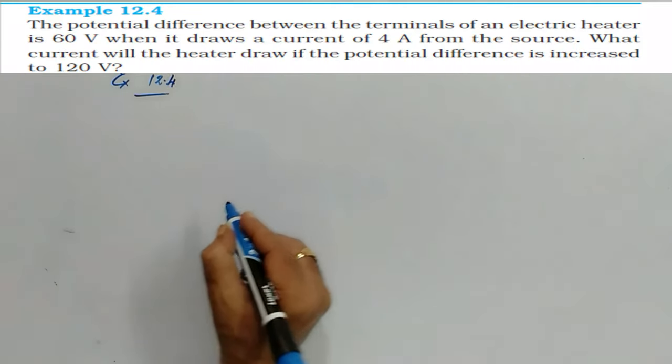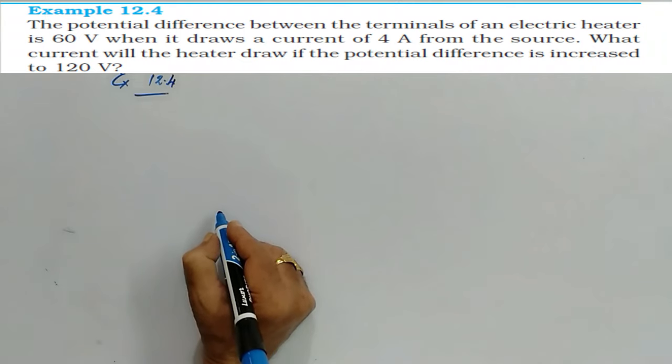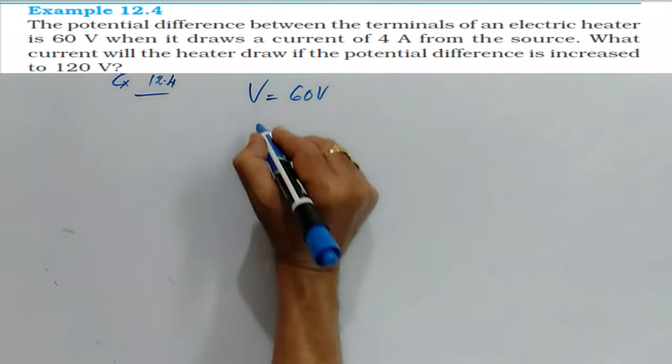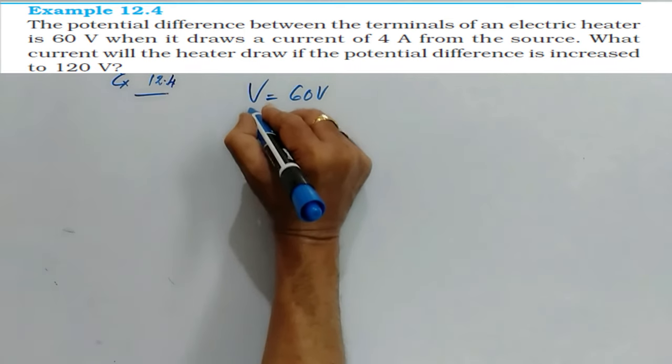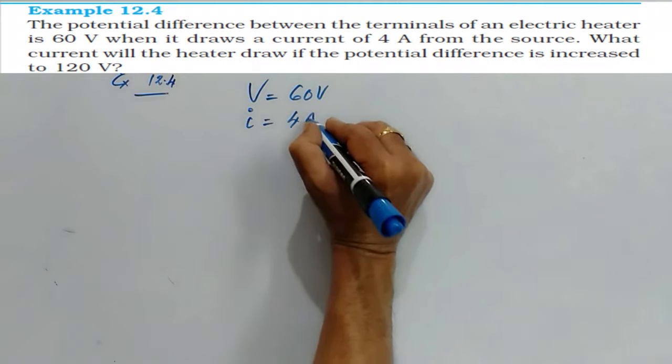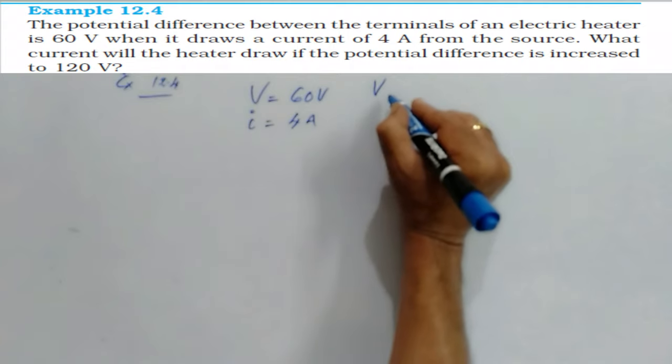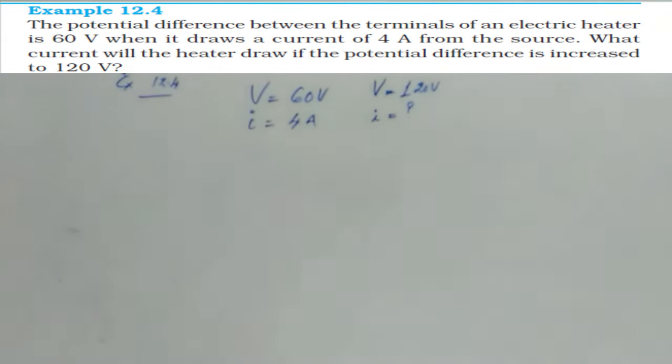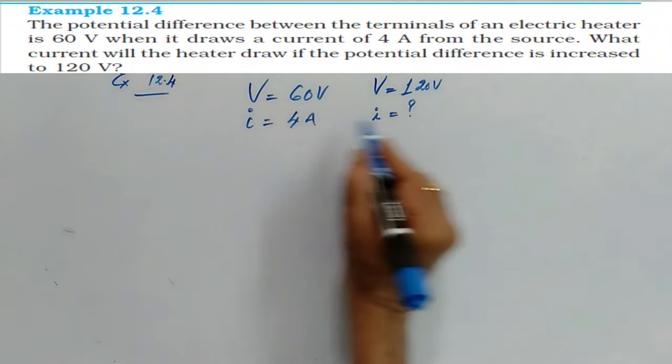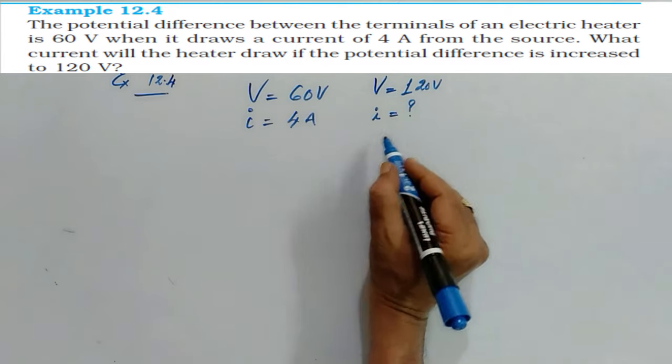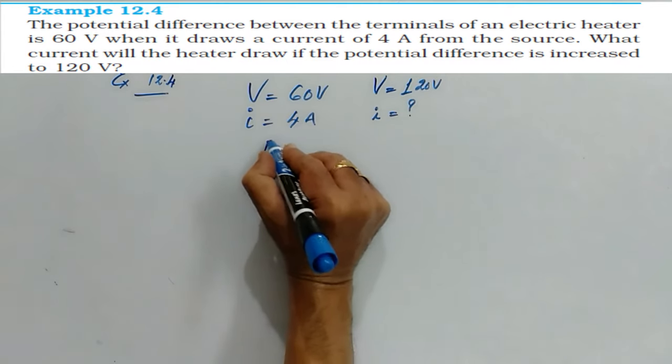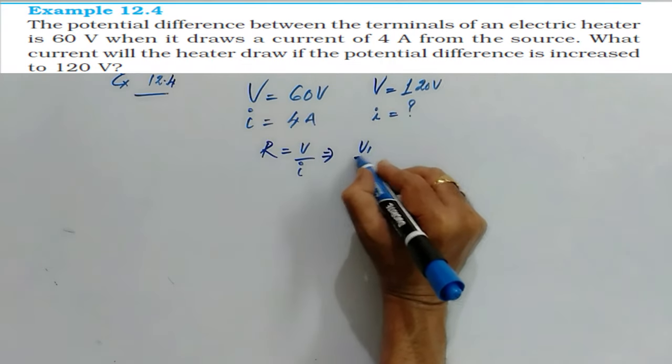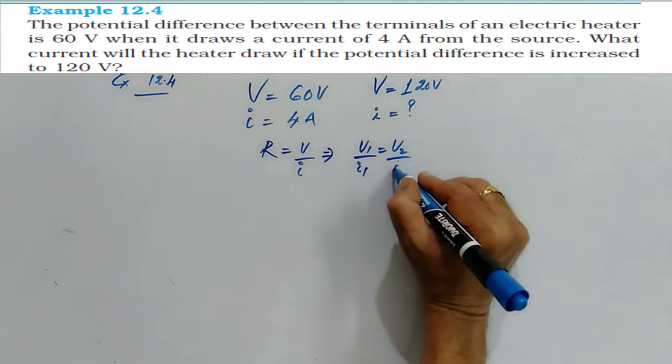In this question, a heater is connected across 60 volts, that is potential difference is given as 60 volts. It draws a current of 4 amperes. The question is: suppose if V is increased to 120 volts, what should be the value of current? As the resistance is same because the same coil is used, what is the formula for resistance according to Ohm's law? V by I. This can be written as V1 by I1 is equal to V2 by I2.